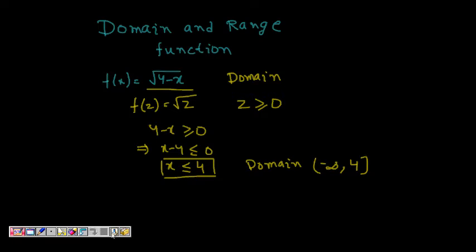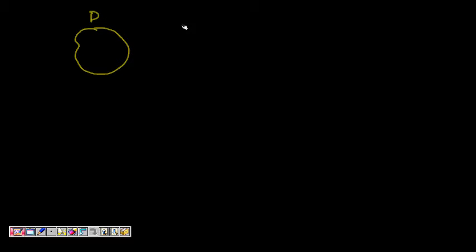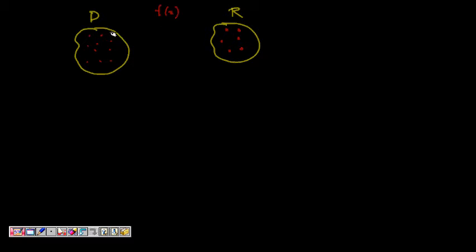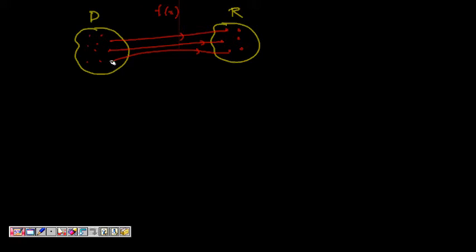We can think of domain and range visually. We have a set of points in the domain, and a set of points in the range. f(x) is a mapping from numbers in the domain to numbers in the range. For each value in the domain, there is only one unique value in the range.